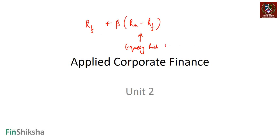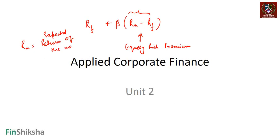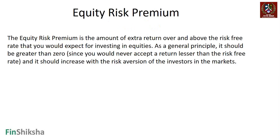We're going to look at what is going to be the risk premium that someone would demand for investing in a stock market over and above the risk-free rate. RM minus RF is called the equity risk premium, where RM is the expected return of the equity market and RF is the risk-free rate.